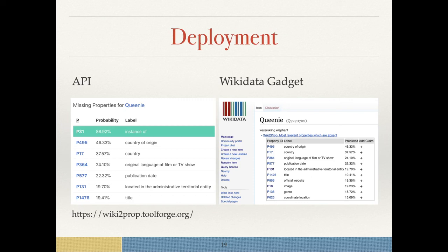The green background signifies predictions which have already been taken care of, where we actually already have a use inside the Wikidata. And on the right side, we see a so-called Wikidata gadget which makes use of the API and only shows and proposes the missing properties per entity.